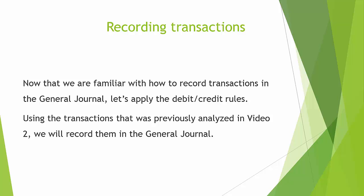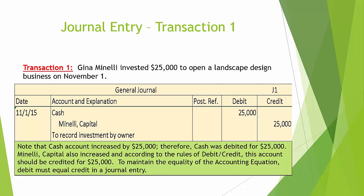Using the transactions that were previously analyzed in video 2, we will record them in the general journal. Transaction number 1: Gina Minnelli invested $25,000 to open a landscape design business. Note that the cash account increased $25,000, therefore cash was debited for $25,000. Minnelli capital also increased, and according to the rules of debit and credit, this account should be credited for $25,000.